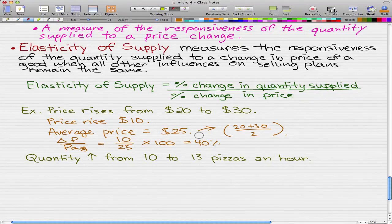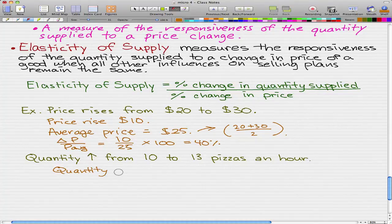So far, so good. Now let's take a look at the quantity. In this example, the quantity increased from 10 to 13 pizzas an hour. So much the same as before, we're going to find the amount of pizzas that, or we're just going to find the quantity change. So the quantity increased by 3.